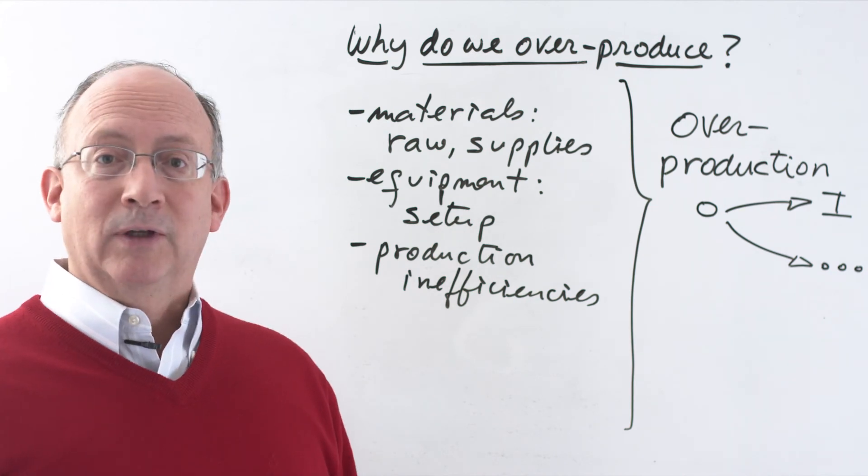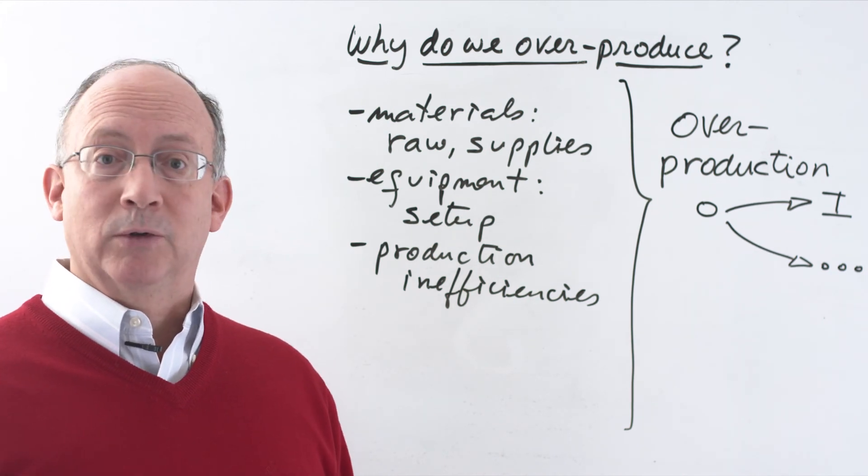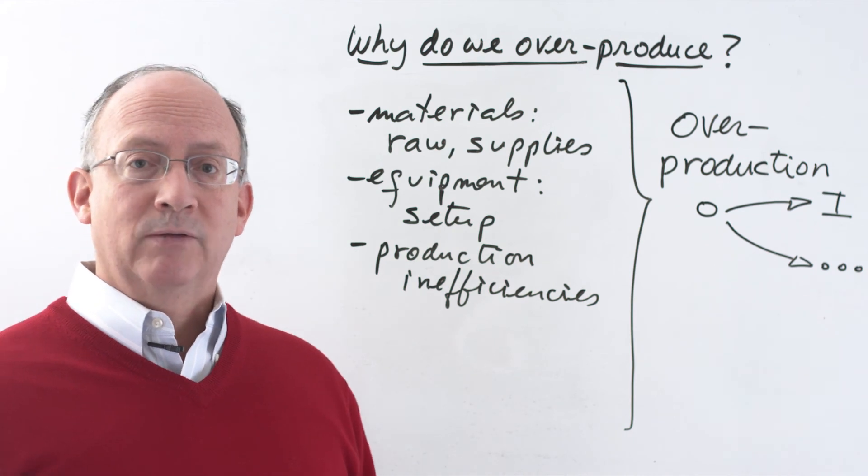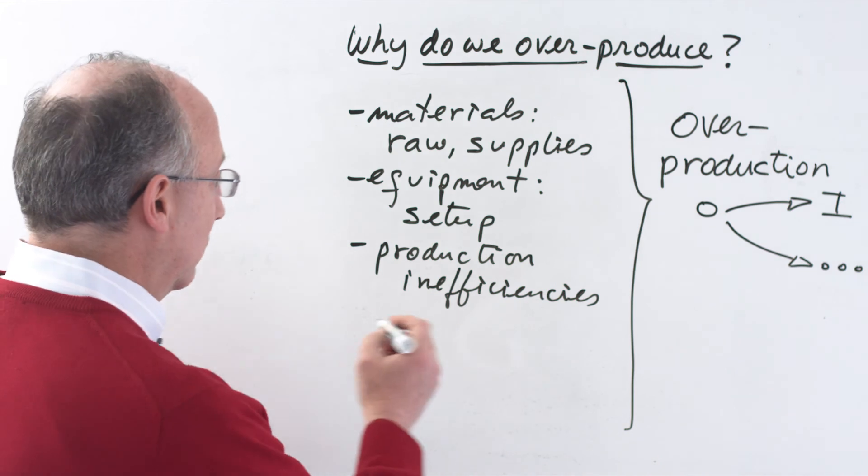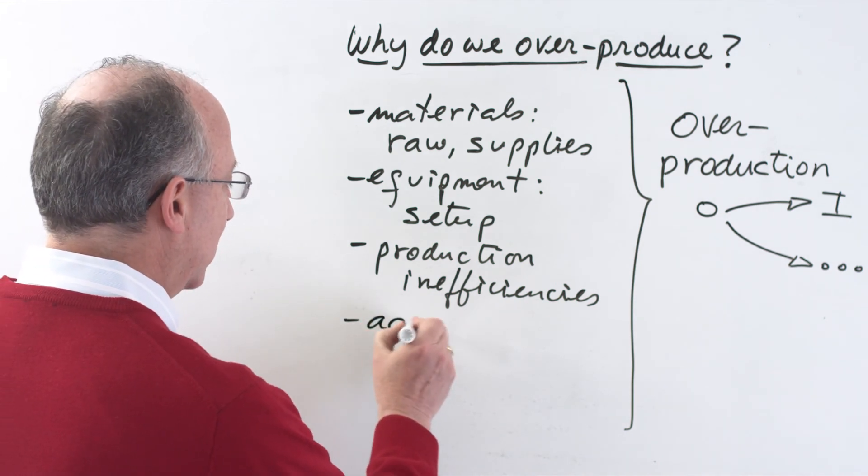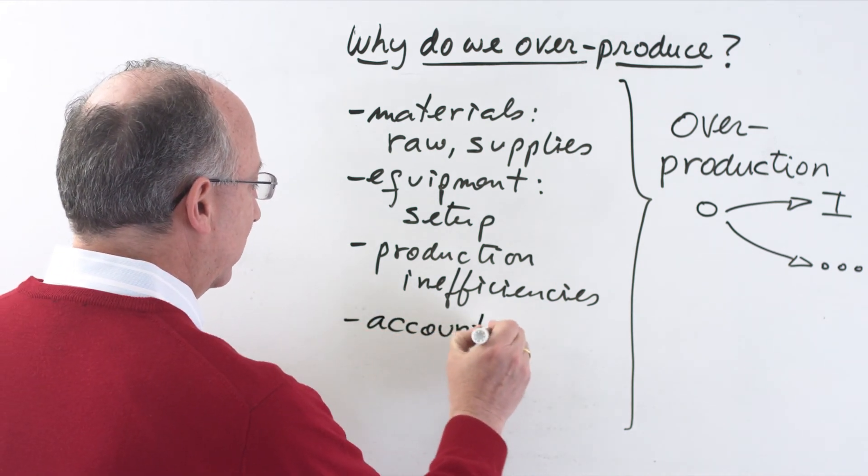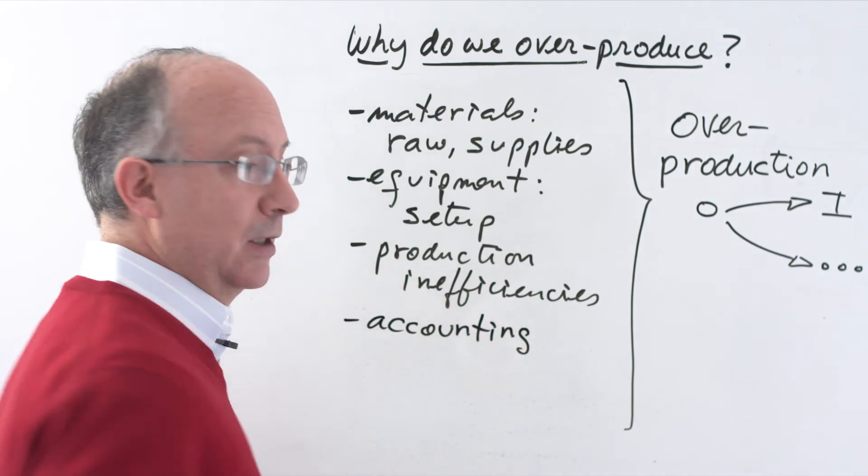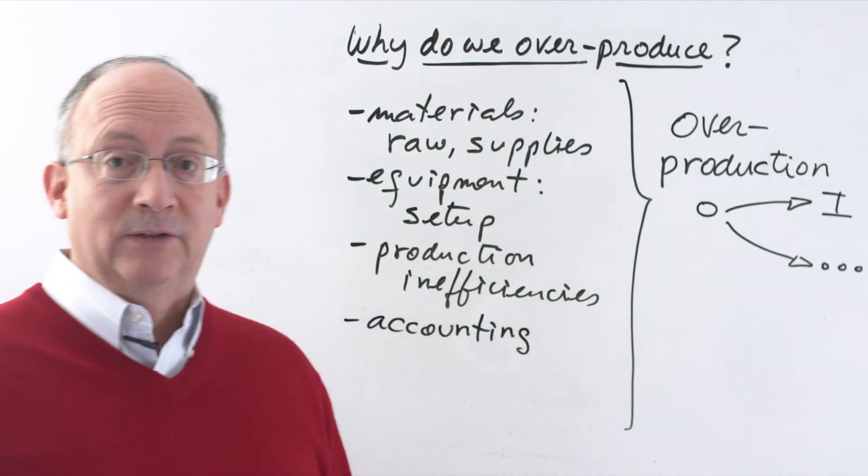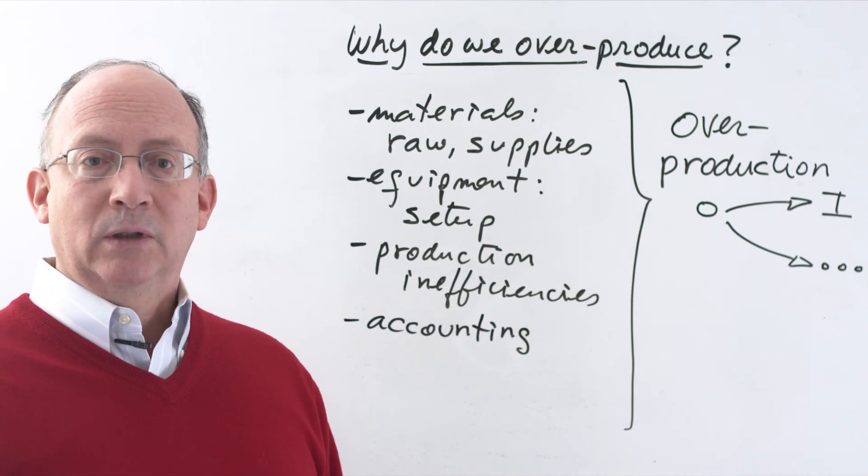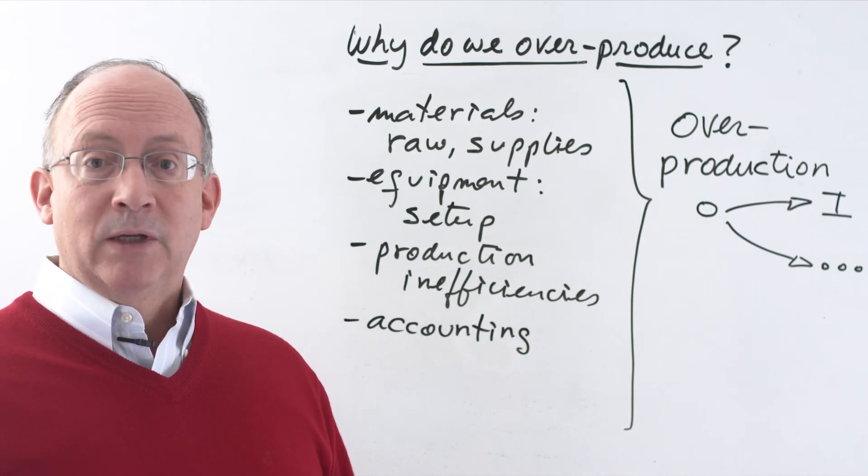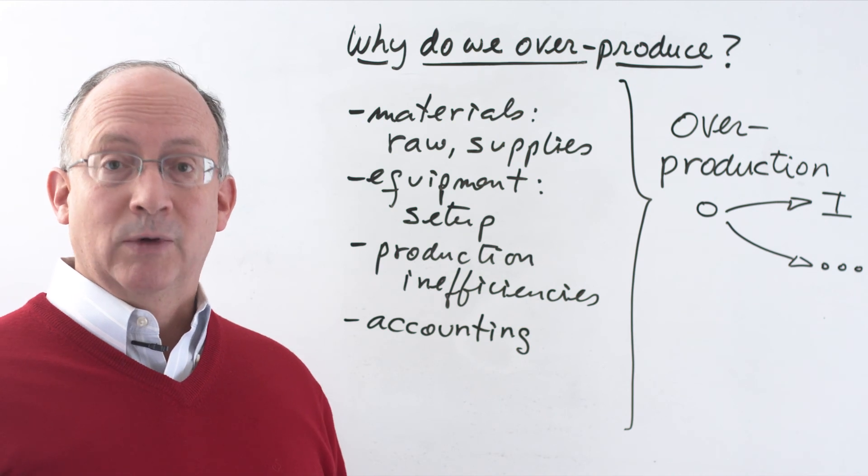Another reason is an accounting related reason that can make a company overproduce. What happens when you have an expensive machine, expensive piece of equipment that is depreciating? In that case, somebody will make the decision that that piece of equipment just can't stay idle, logically. And so the supervisor in charge of it will keep it running, by the way, thinking that he's doing the company a great service.